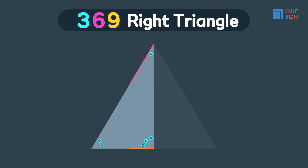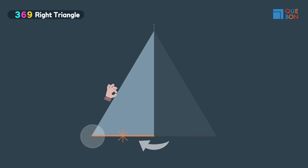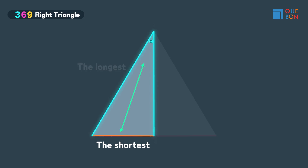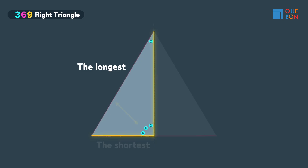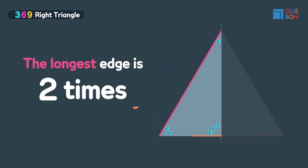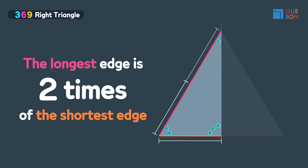Now the most important idea is the relationship between the lengths of the edges. In this triangle, the hypotenuse is the longest edge, and the shortest edge is the one opposite the smallest angle. The edge opposite 30 degrees is the smallest. The hypotenuse, which faces 90 degrees, is the longest. The edge that faces 60 degrees is the second longest.